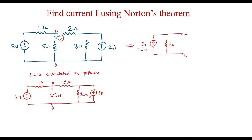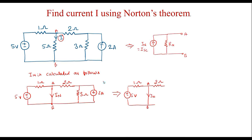To simplify the circuit further, we can see that the 2 amp current source is in parallel with the 3 ohm resistor. I will convert this current source into a voltage source to make simplification easy. That is, V equals I times R, which is 2 times 3, equal to 6 volts. The 3 ohm resistor is now connected in series with this 6 volt voltage source, with the plus terminal upward. This circuit is equivalent to the original.